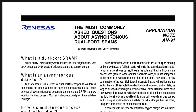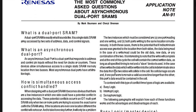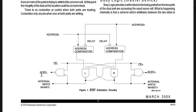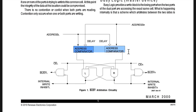Looking at application note AN991 from Renesas — the manufacturer of the dual-ported SRAM chips I've been using — we see a diagram for the arbitration circuit that produces the BZ signals. There's a BZ left and BZ right, one for each side of the dual-ported SRAM. The addresses placed on both buses go straight into comparators without being gated by the write or read-write signal.